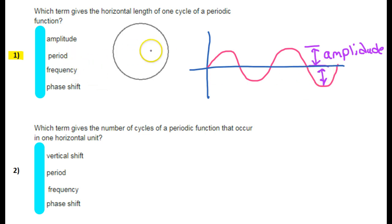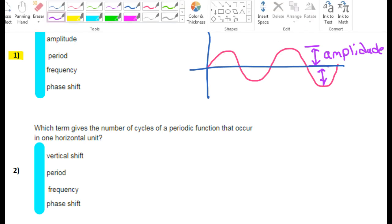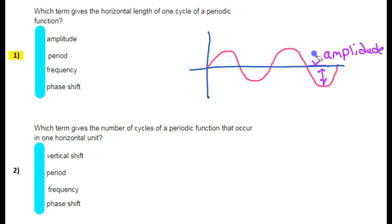Now the period. The period is the length of one cycle of the function. So looking at this function, it starts at the midline and it goes up, it comes down and comes back. This would be one cycle of the function.